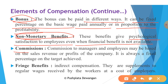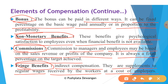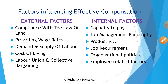Commission is another element — commission to managers and employees may be based on the sales revenue and profit of the company; it is always a fixed percentage of the target achieved. Fringe benefits are indirect compensations that supplement the regular wages received by workers at the cost of the employer. They include benefits such as paid leave, pension, and health insurance plans, and form an integral part of the total compensation package based on critical job factors and performance.